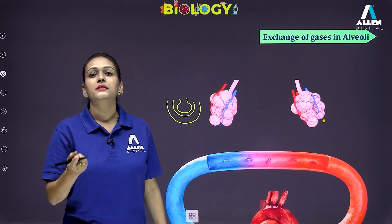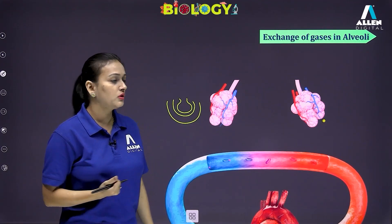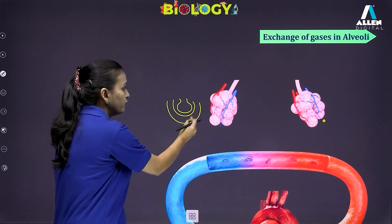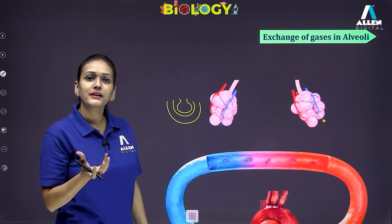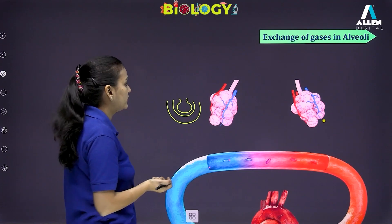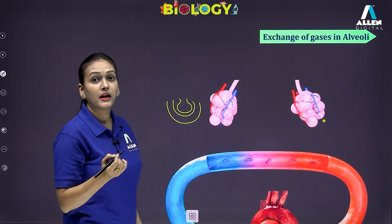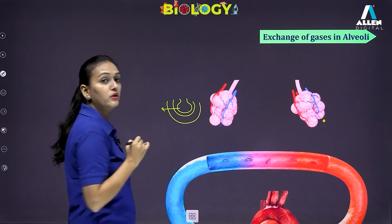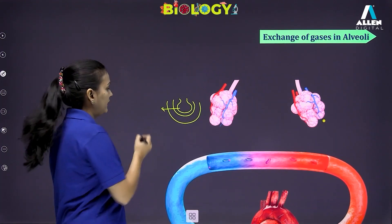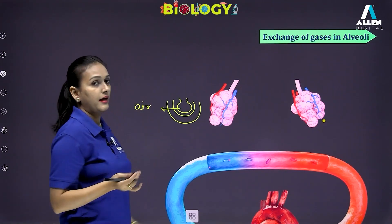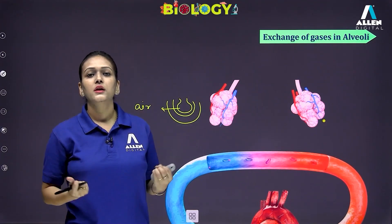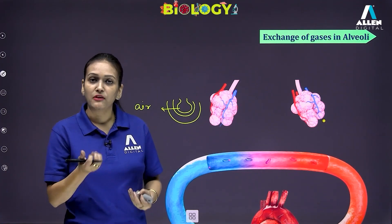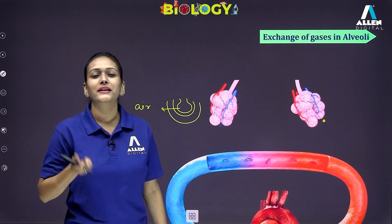This alveolar sac is small and thin, and has a cavity within it known as the alveolar cavity. This alveolar cavity is filled with air. As we inhale, the space within the alveoli — the alveolar cavity — is filled with that inhaled air.